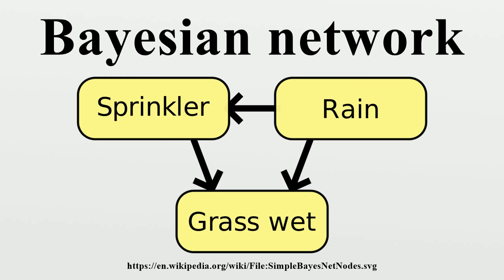This can also be expressed as: for each node which is not a descendant of V, and for each node which is a parent of V. Note that the set of parents is a subset of the set of non-descendants because the graph is acyclic. To develop a Bayesian network, we often first develop a DAG G such that we believe X satisfies the local Markov property with respect to G, sometimes by creating a causal DAG. We then ascertain the conditional probability distributions of each variable given its parents in G. In many cases, particularly where the variables are discrete, if we define the joint distribution of X to be the product of these conditional distributions, then X is a Bayesian network with respect to G.